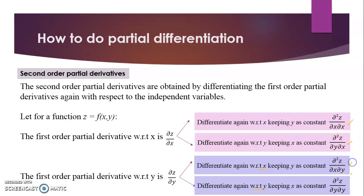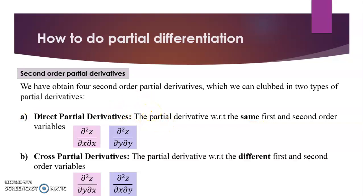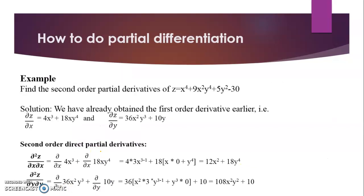We have four second-order partial derivative formulas, grouped into two types. Direct partial derivatives are derivatives with respect to the same variable for both first and second order — the denominator shows XX or YY. Cross partial derivatives are derivatives with respect to different variables for the first and second order — the denominator contains both X and Y.